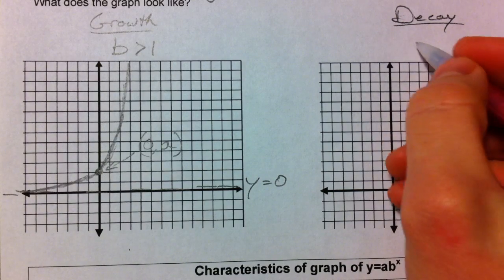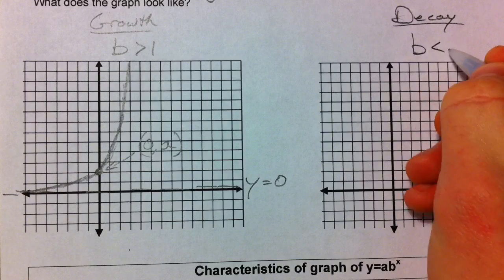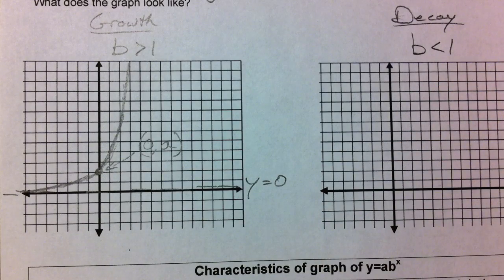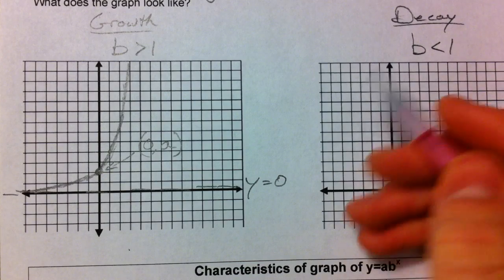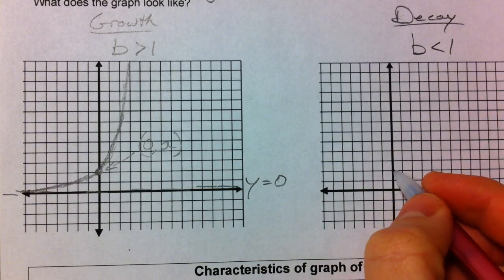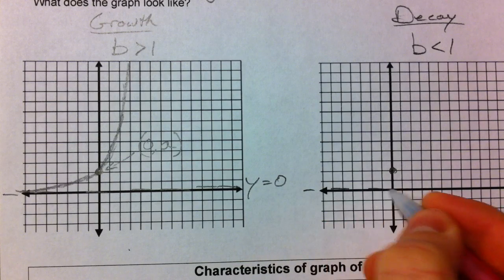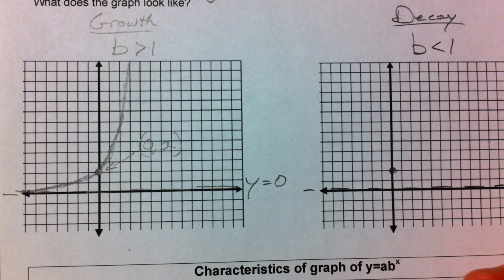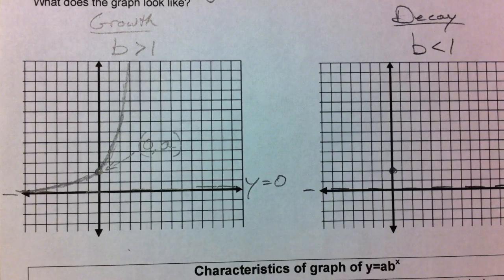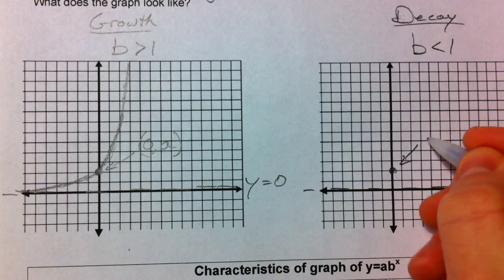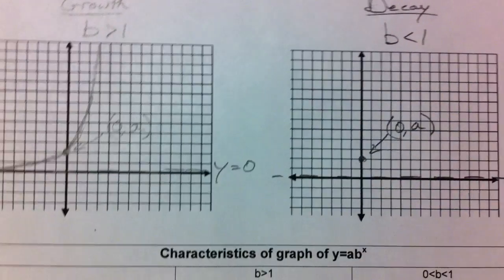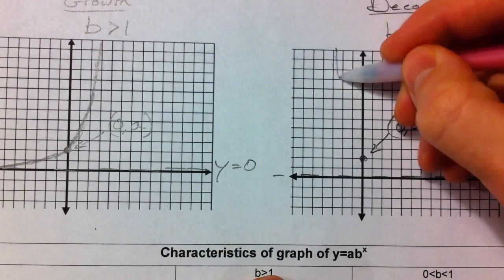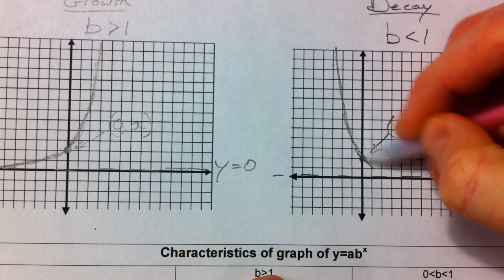So, decay. If b is less than 1, that's when numbers get smaller. Because you multiply by 1 half times 1 half times 1 half times 1 half. And so, that's when you have decay. Now, it's just going to be the exact reflection image of the other graph. This is still going to be 0, a. Whatever your a value, this is just going to start up higher and then go down.